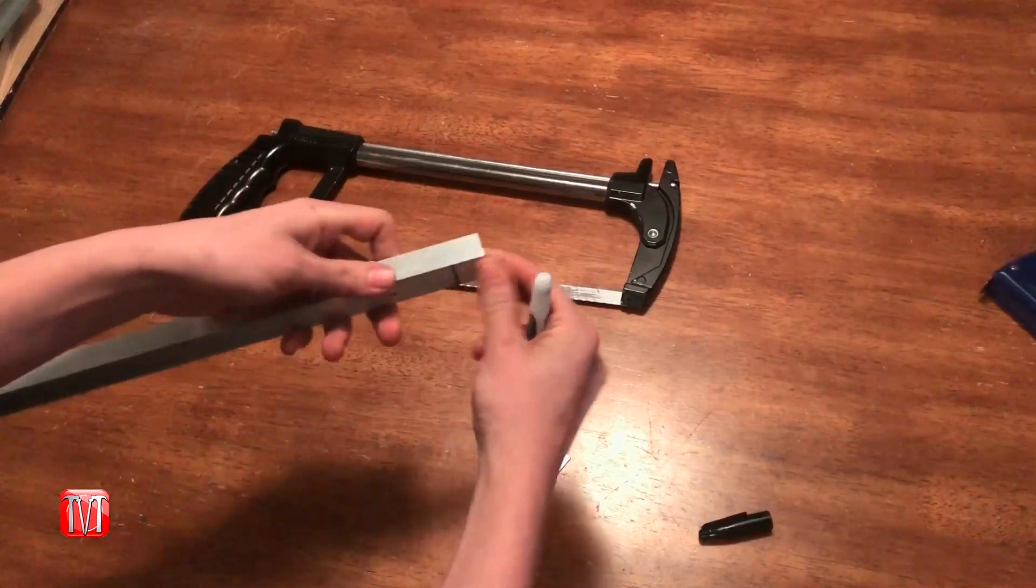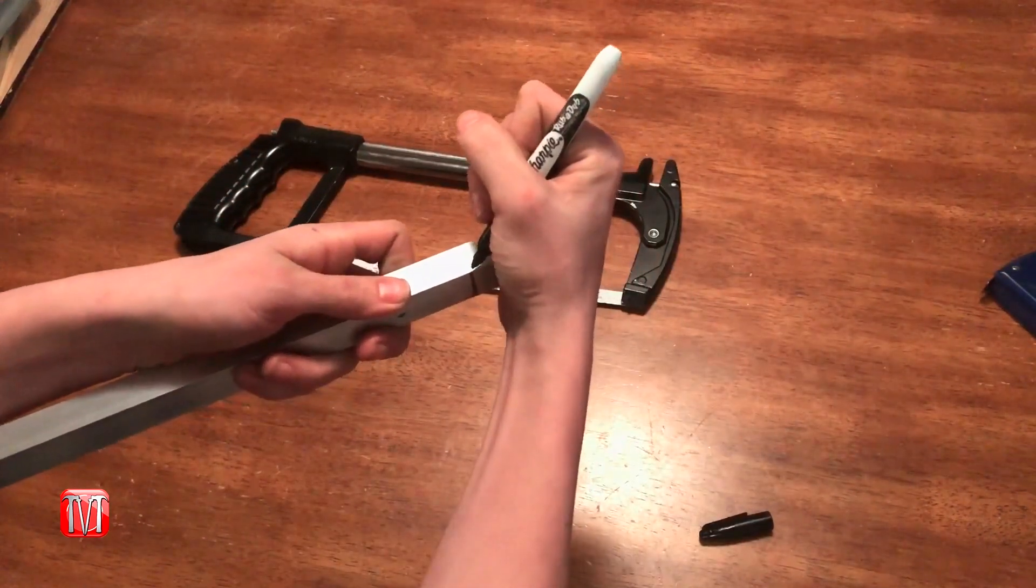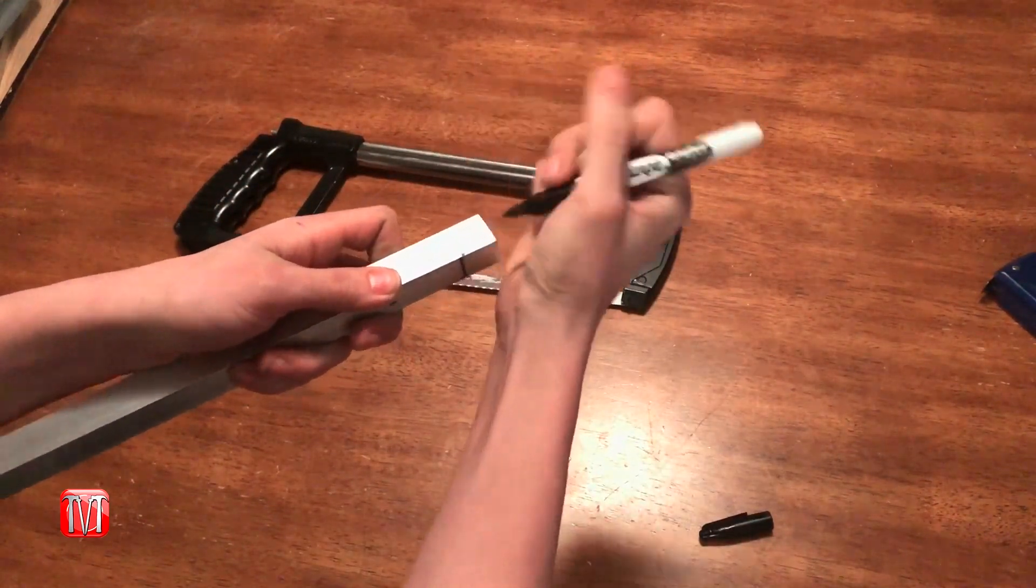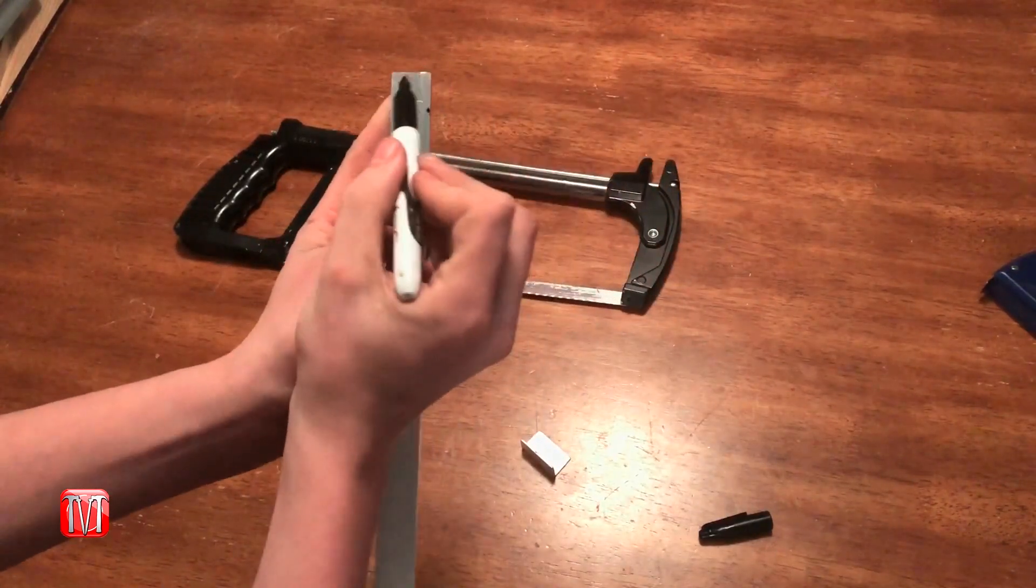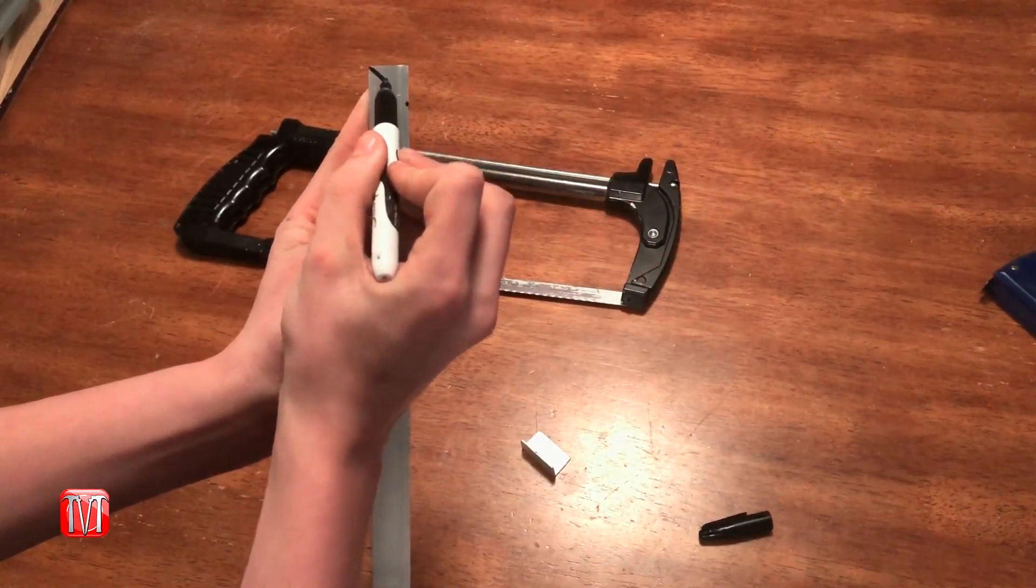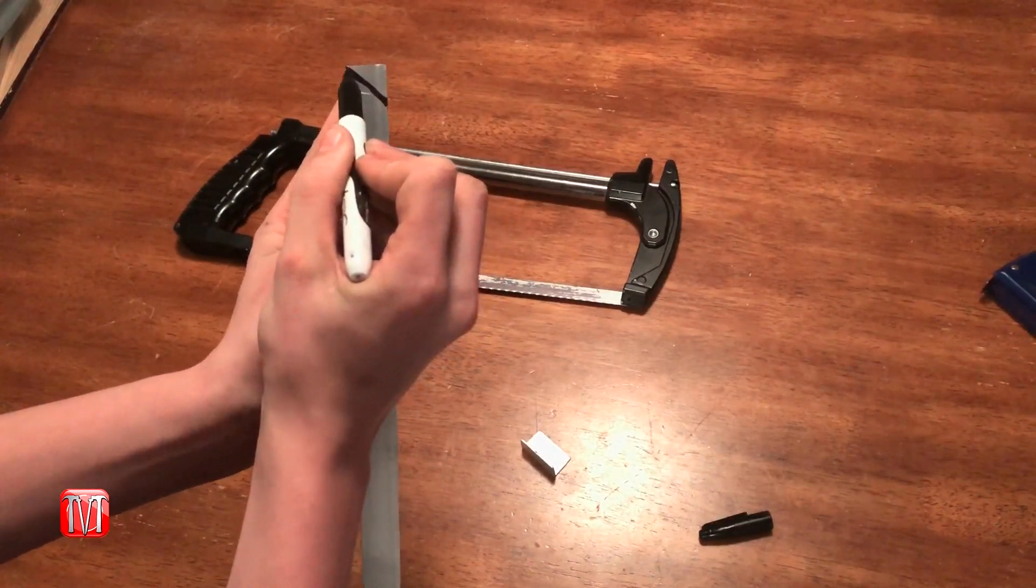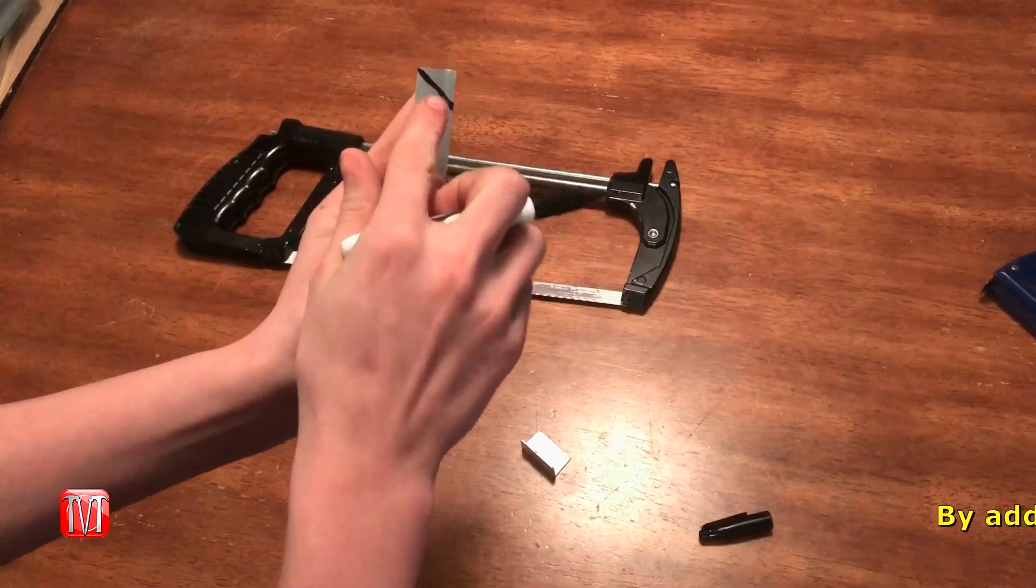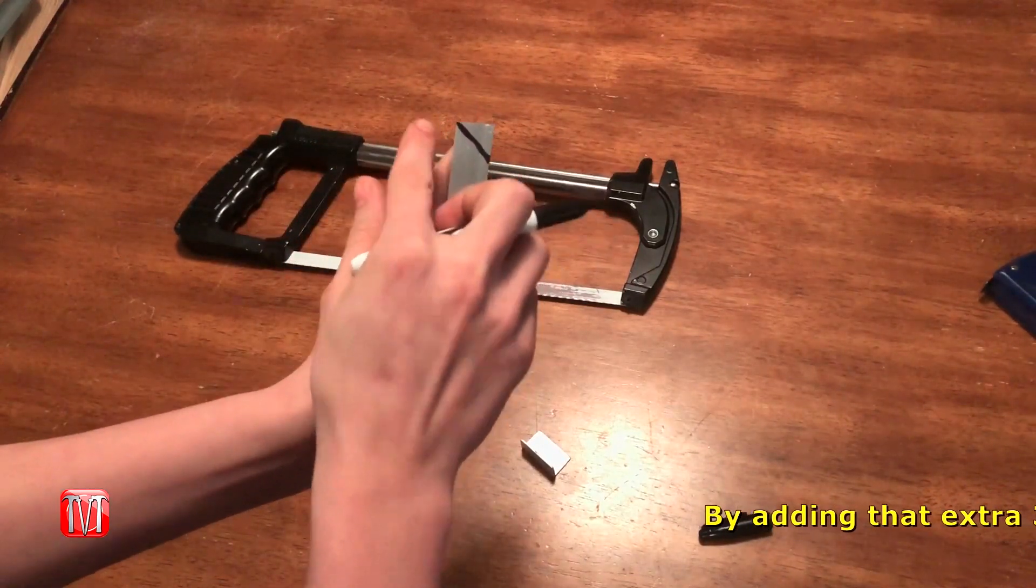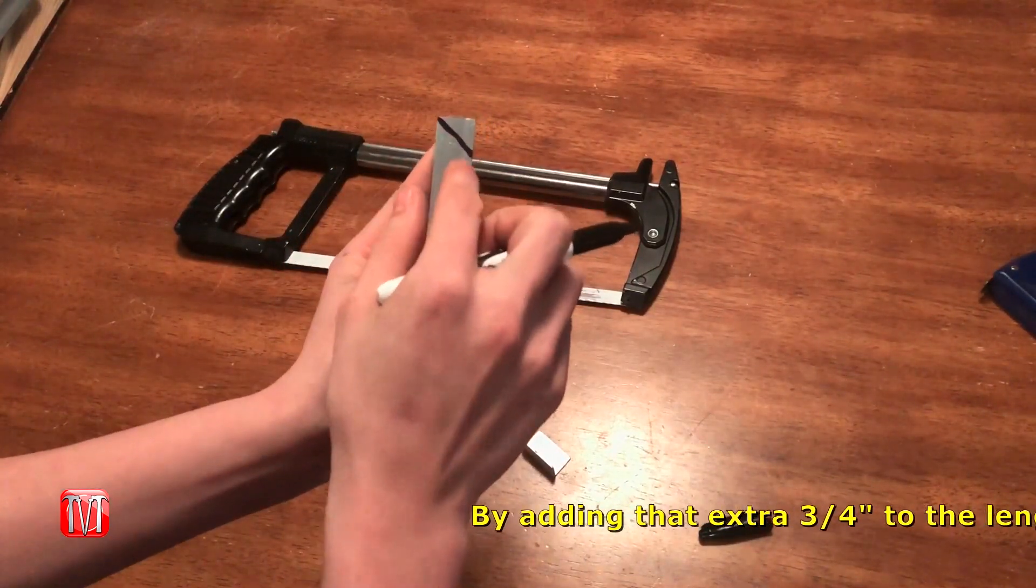From there, you're going to mark this side at the same exact spot, and you're going to draw a line from this corner connecting that dot. That is going to be your 45 degree angle. We're cutting inwards instead of outwards, that's the biggest difference.